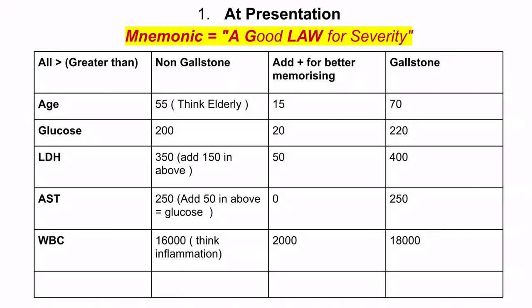For non-gallstone pancreatitis: age greater than 55, glucose greater than 200, LDH greater than 350, AST greater than 250, and WBC greater than 16,000.